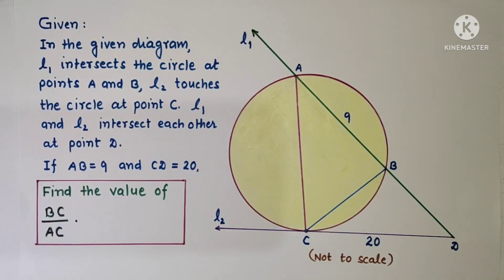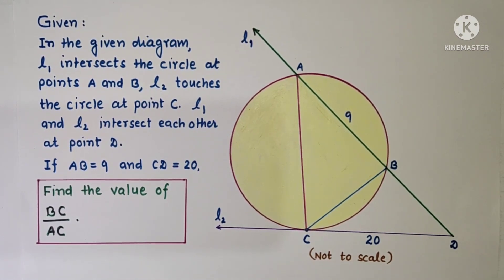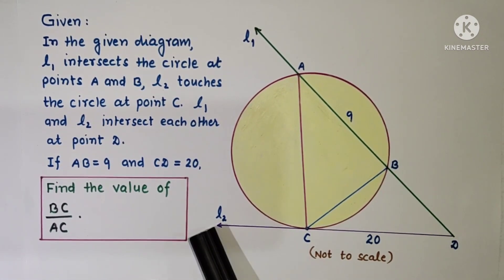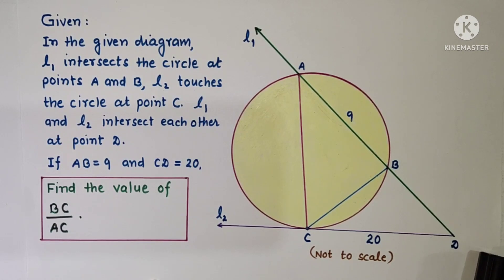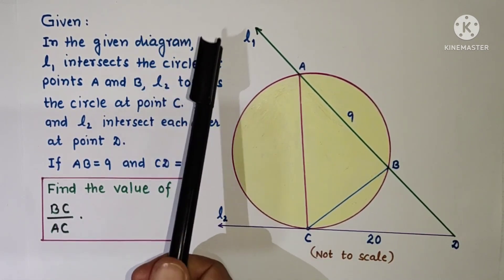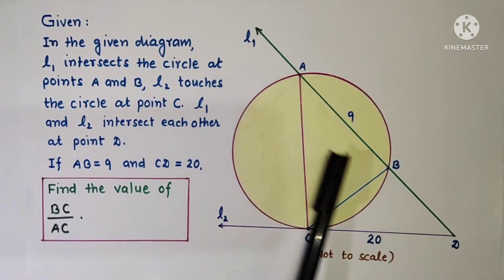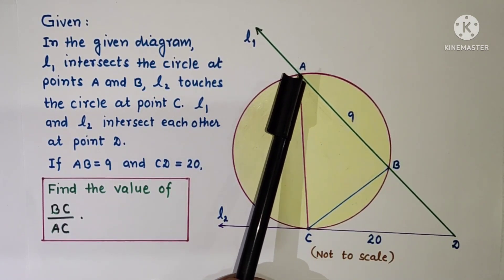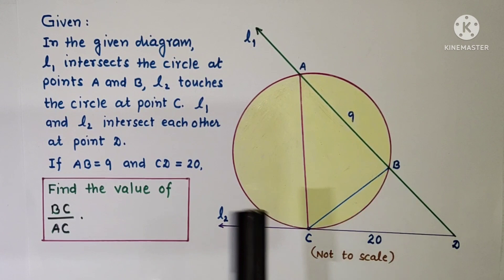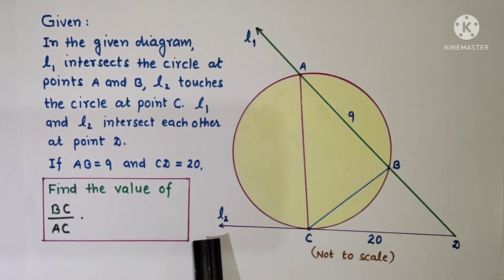Hello friends and respected viewers, you are all welcome to my channel. In this problem we are given that L2 is a tangent which touches the circle at point C, and secant L1 intersects the circle at points A and B. Secant L1 and tangent L2 intersect at point D.